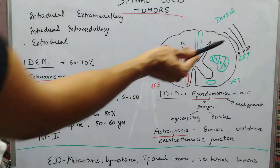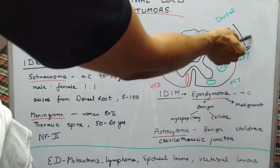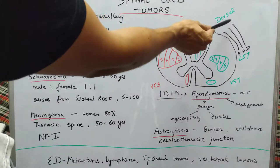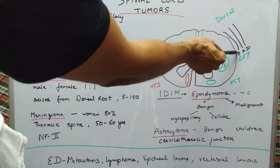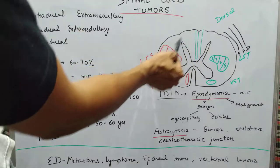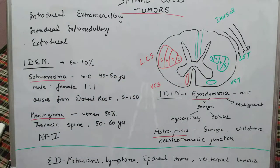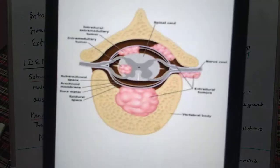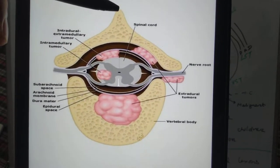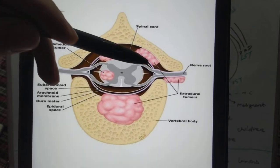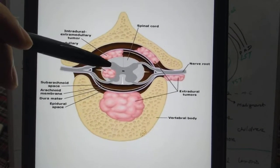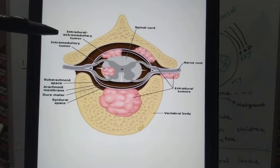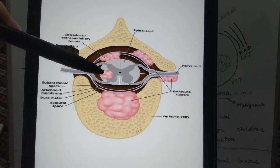Any lesion outside the dura mater is extradural; any lesion inside the dura mater is intradural. Intradural can be of two types: intradural extramedullary (in the region of pia mater and arachnoid mater) or intradural intramedullary (within the medullary tissue itself). So our classification is: intradural extramedullary, intradural intramedullary, and extradural.